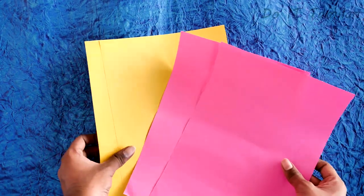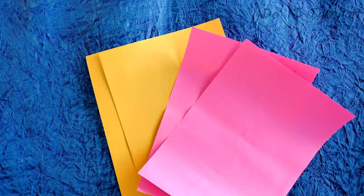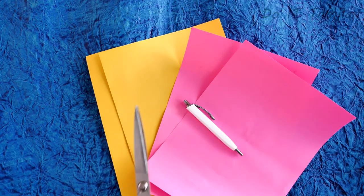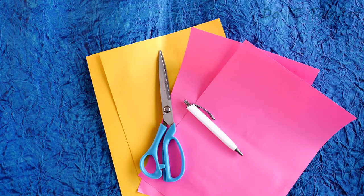First, you want to see an A4 sheet in any color. The second is the pen. The third is scissors and the fourth is the scale.